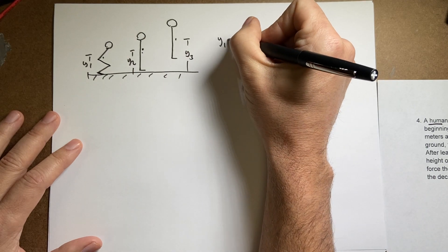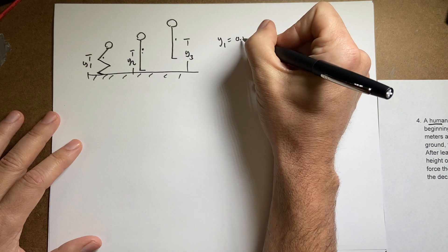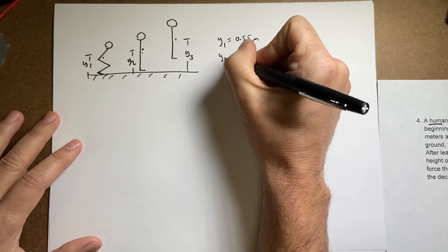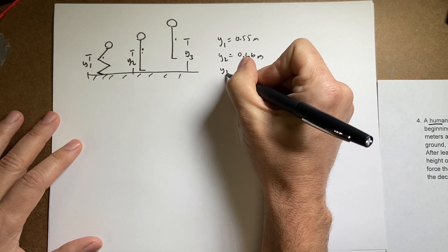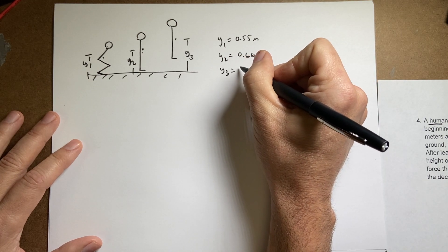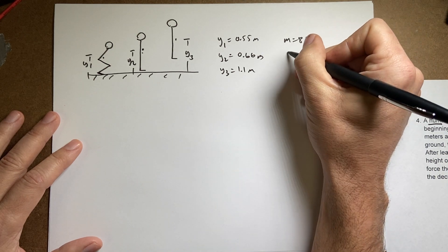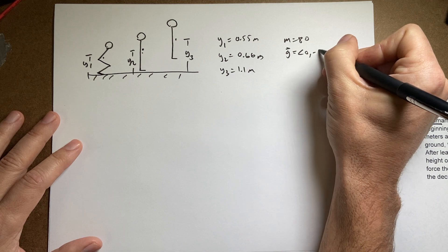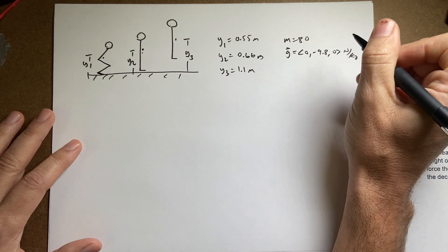I'll just write down y1 was 0.55 meters, y2 was 0.66 meters, y3 was 1.1 meters. And then the mass was 80. And then g, I'll write it as a vector, 0, negative 9.80 newtons per kilogram. That's going to be important.